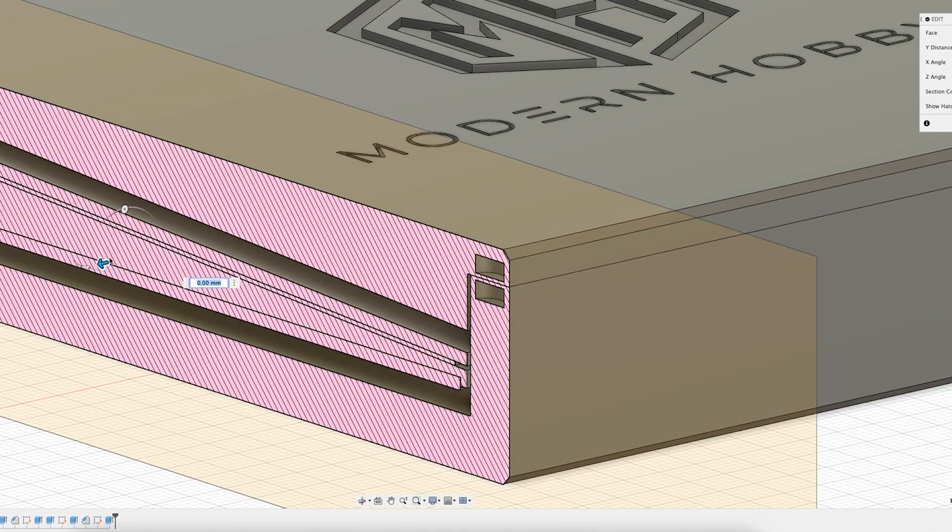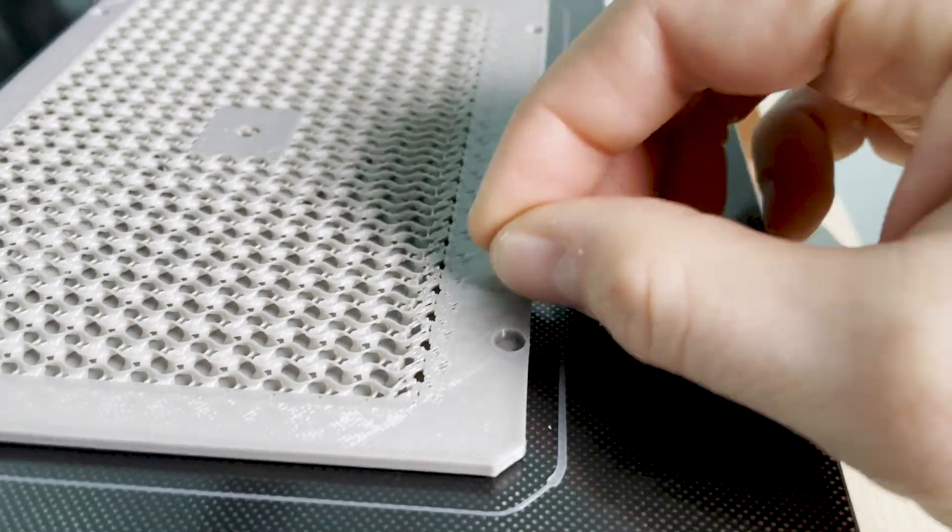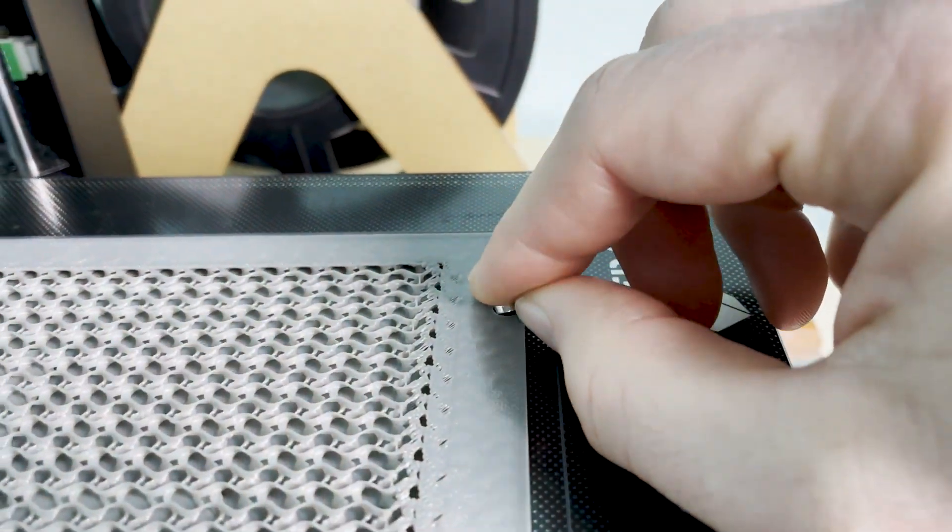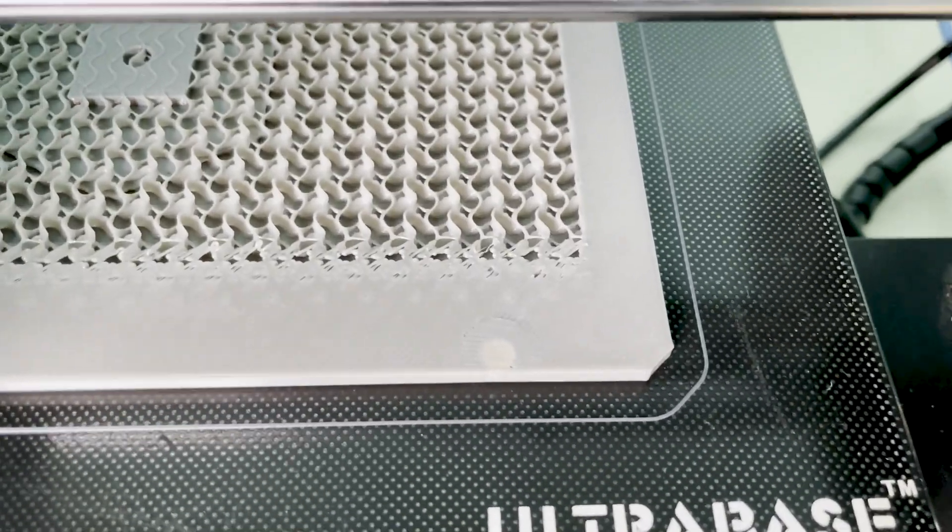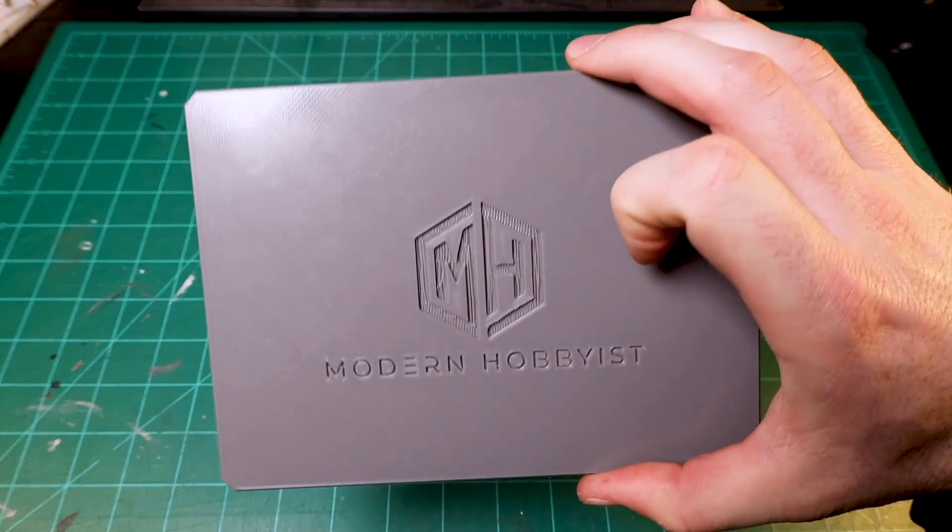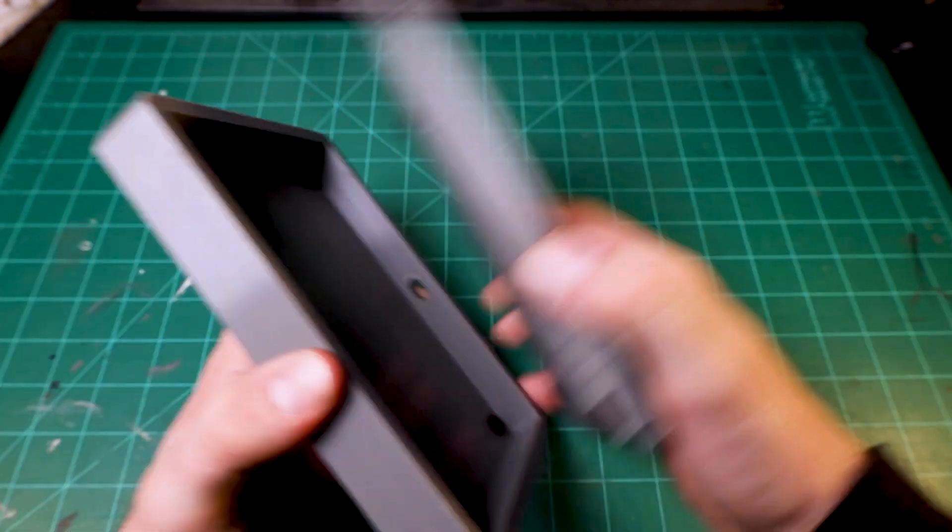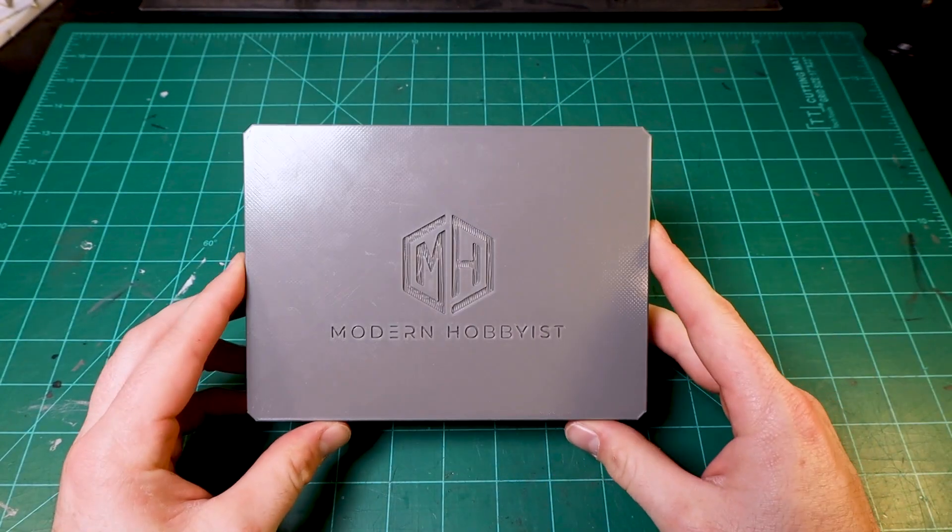If you want to take this concept even further, you can embed the nuts or magnets directly into your parts. This involves designing a cavity in your part that the nut or magnet fits into, then pausing the print at the right layer so you can insert the nut or magnet before resuming the print. This method is called a captive nut and it definitely bumps the difficulty level up a few notches, as you not only have to add the cavities to the inside of your parts, but you also have to configure the slicer to stop the print at the right layer.